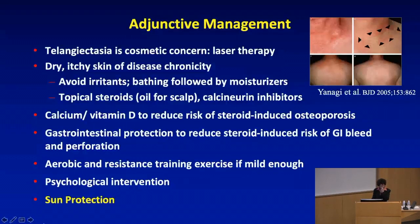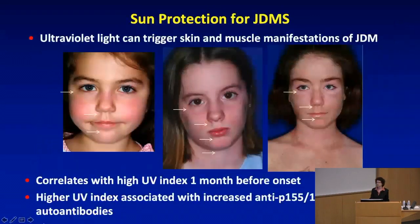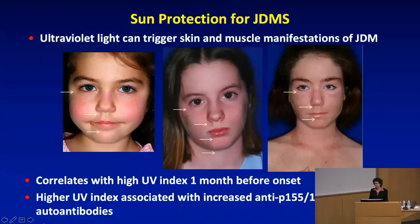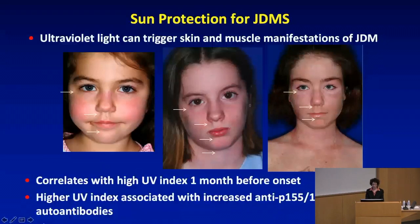Sun protection is a cardinal feature of management for JDM. Ultraviolet light not only triggers the skin disease but also exacerbates or can reactivate the myositis of JDM. There has been shown to be correlation with high UV index one month before onset, and higher UV index has been associated with an increase in myositis-specific autoantibodies — specifically with the anti-p155-140 (TIF-1 gamma), but not with the anti-MJ/NXP2.